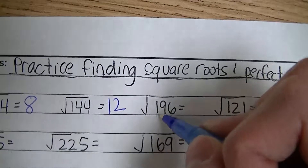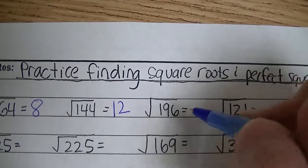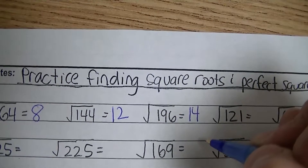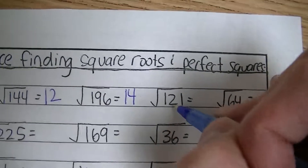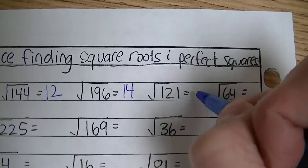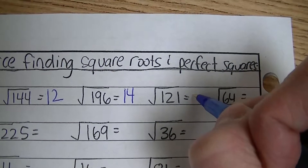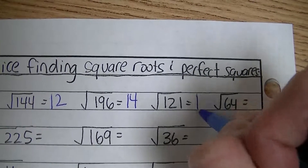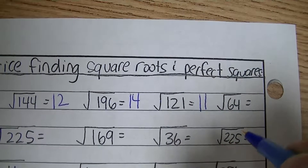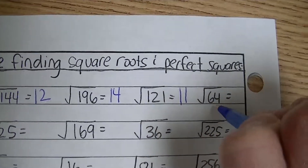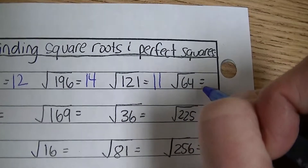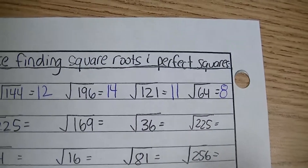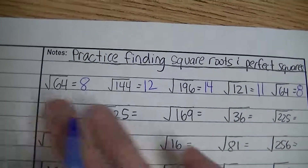The square root of 121 — ask yourself what number multiplied by itself equals 121, and that's 11. And again, the square root of 64 is 8 — you should know that by now. You should pause the video now and try to do the rest.